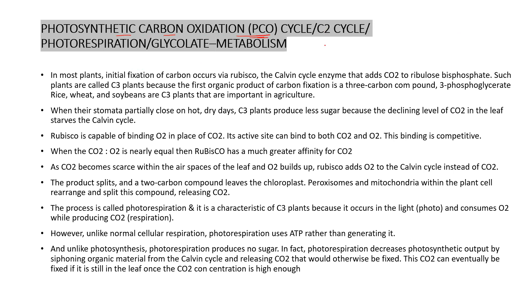In this cycle, the first stable product will be a 2-carbon compound. So this cycle is also known as the C2 cycle, and that 2-carbon compound is glycolate. So it is also called the glycolate cycle.